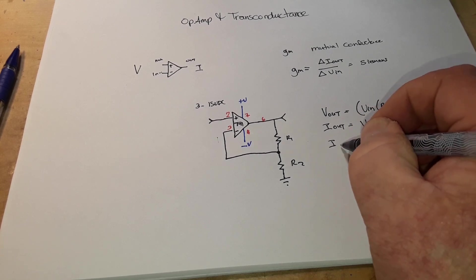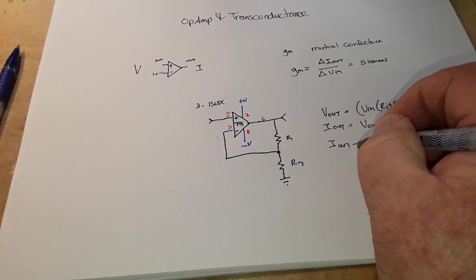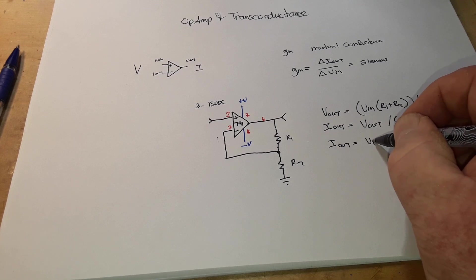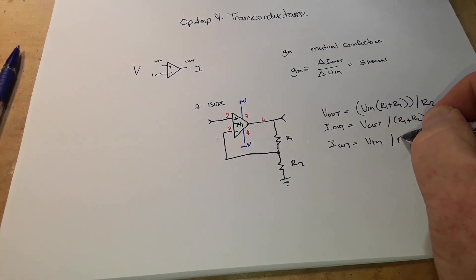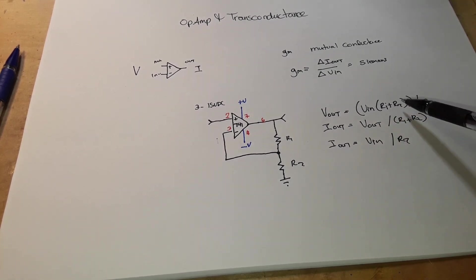And if we simplify it even further, I out is equal to V in divided by R2. Remember we did some algebra here.